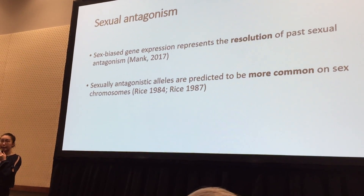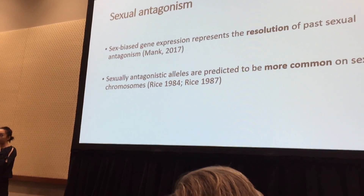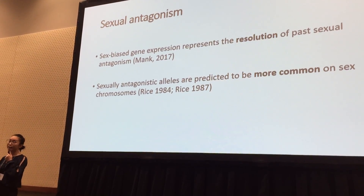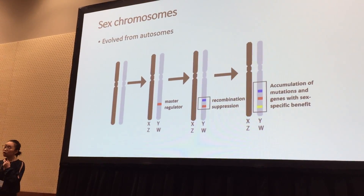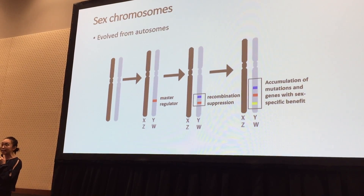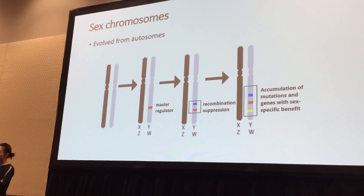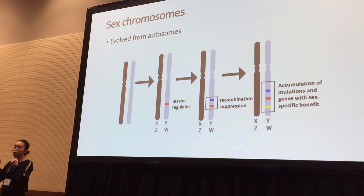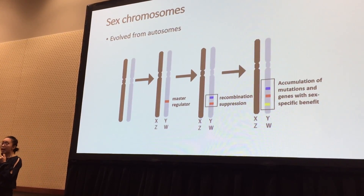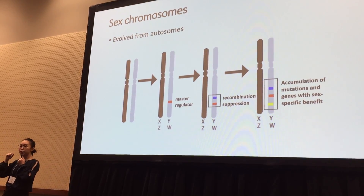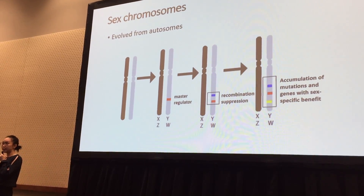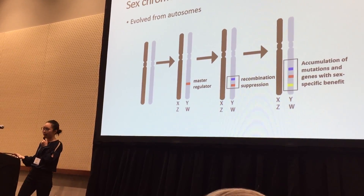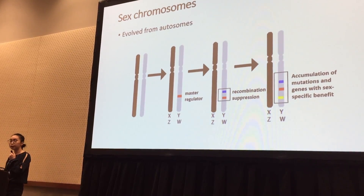In an influential paper by Rice in 1984, he predicted that sexually antagonistic alleles are more common on the sex chromosomes than the autosomes. To understand why that could be the case, we have to look at how sex chromosomes evolve. Sex chromosomes are predicted to evolve from a pair of identical autosomes with the acquisition of a master regulator of sex. When this master regulator is in close proximity with genes that have sex-specific benefits, recombination around those genes will be suppressed. Over time, this region is predicted to accumulate more mutations and more genes with sex-specific benefits, such as sexually antagonistic alleles.